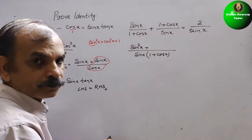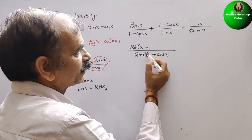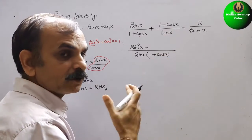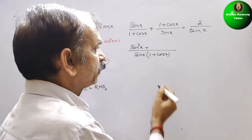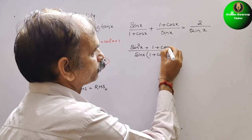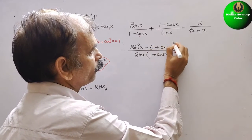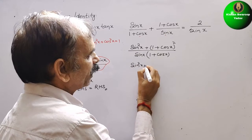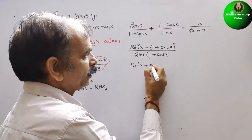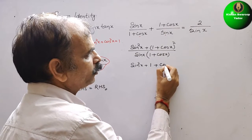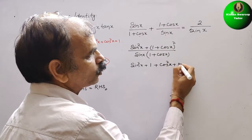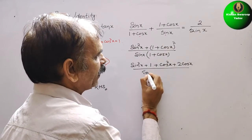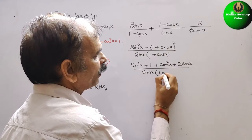Next, here it is sin x, so we have to multiply by 1 plus cos x. So here 1 plus cos x is there, so it will become 1 plus cos x whole square. Now solve this bracket. Here we get sin square x plus, using a plus b whole square, that is a square plus 2ab plus b square. That means cos x, and here 1 plus cos x.